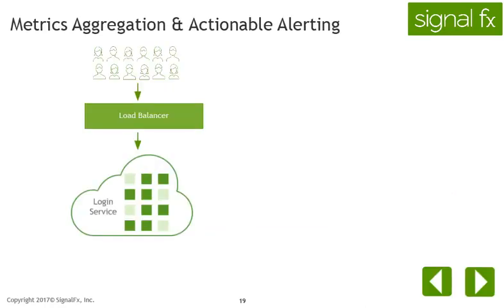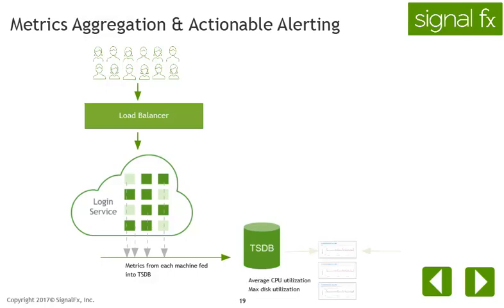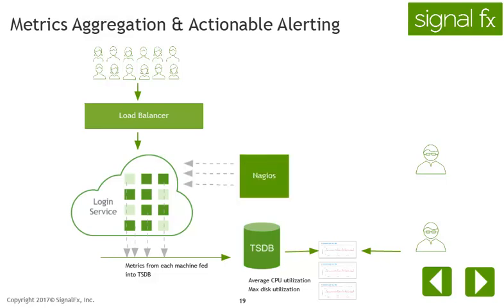Some organizations take information from each machine and feed it into an open source time series database, otherwise known as a TSDB. Charts displaying aggregated data such as averages, mins, and maxes across all machines are created. Nagios still checks if the machine is up or down, and when an alert is fired for machines that are down, the charts are used to see how the entire cluster is affected.